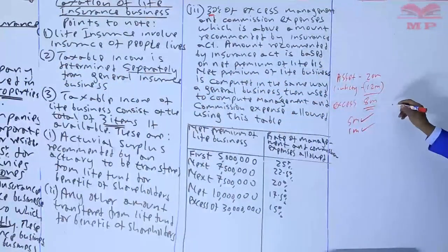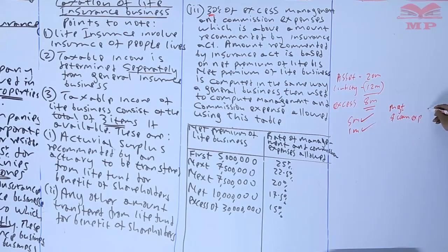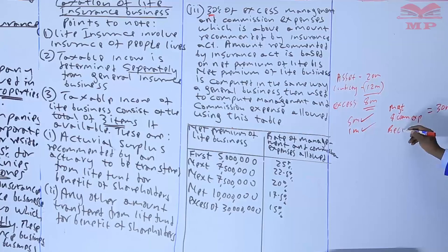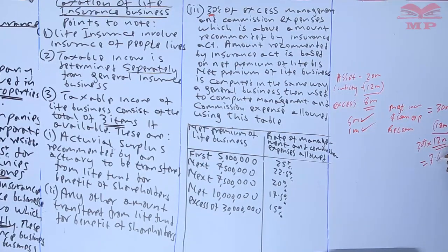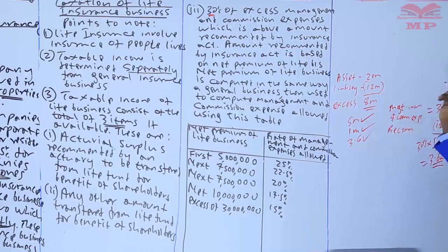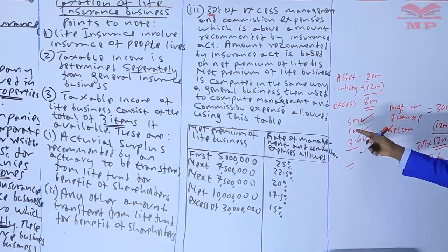For example, if the management and commission expense incurred is 30 million, and the amount recommended by the Insurance Act is 18 million, then the excess is 12 million. We take 30 percent of that excess: 30 percent of 12 million equals 3.6 million. That 3.6 million becomes a taxable income item, which you then add to the others.